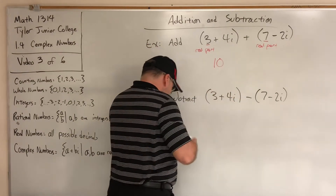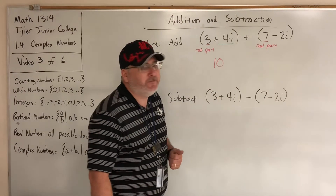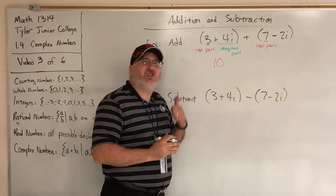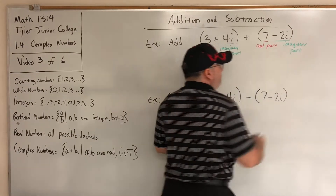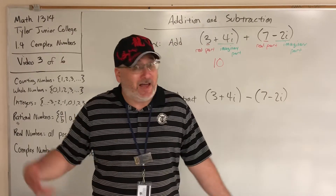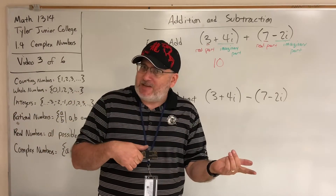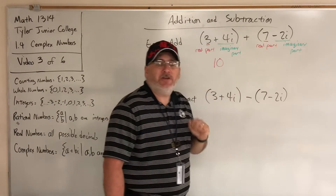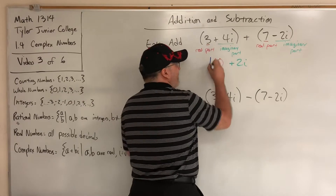Now for the imaginary parts — the parts that have i. The imaginary part of the first complex number is positive 4i, and the imaginary part of the second is negative 2i. You combine them the same way you'd combine 4x and negative 2x: just combine the coefficients but keep the same like term. Positive 4 and negative 2 gives positive 2, so positive 4i and negative 2i gives positive 2i.